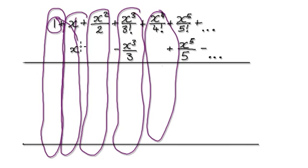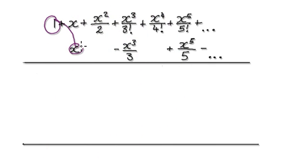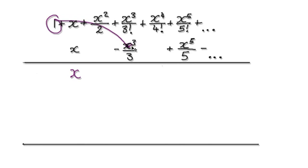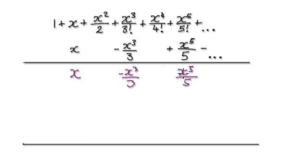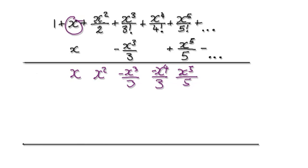This times this will be x squared. This times this will be x. So it's going to be this times this, which will be x. And then this times this, which will be minus x to the power of 3 over 3. And then this times this, which will be x to the power of 5 over 5. And then this times this, which will be x squared — put that in your x squared column. And then this times this, it will be minus x to the power of 4 over 3 — put it into your x to the power of 4 column.